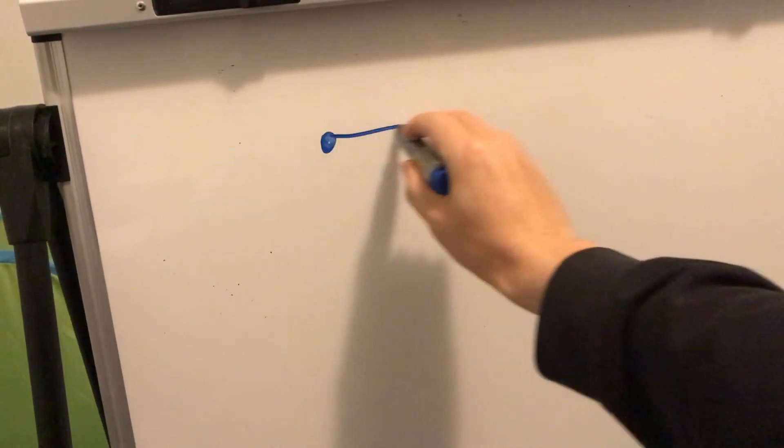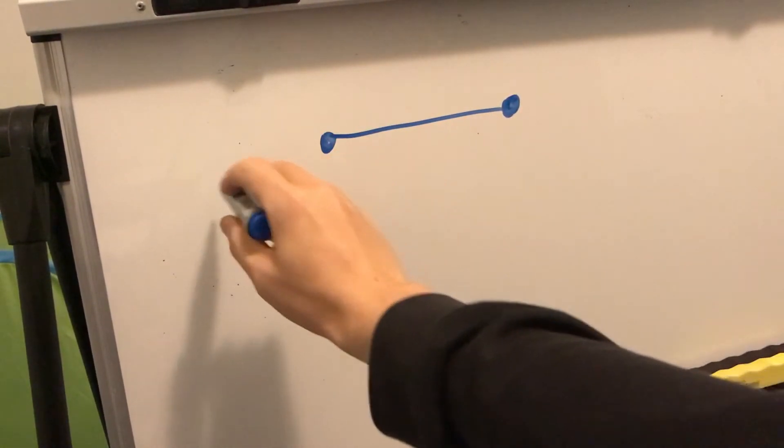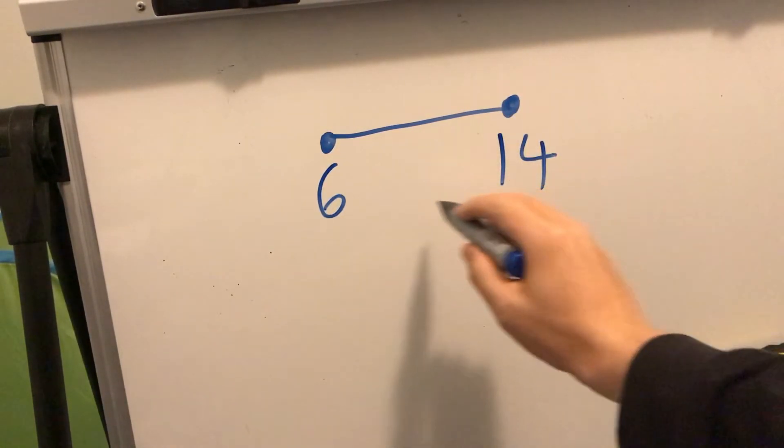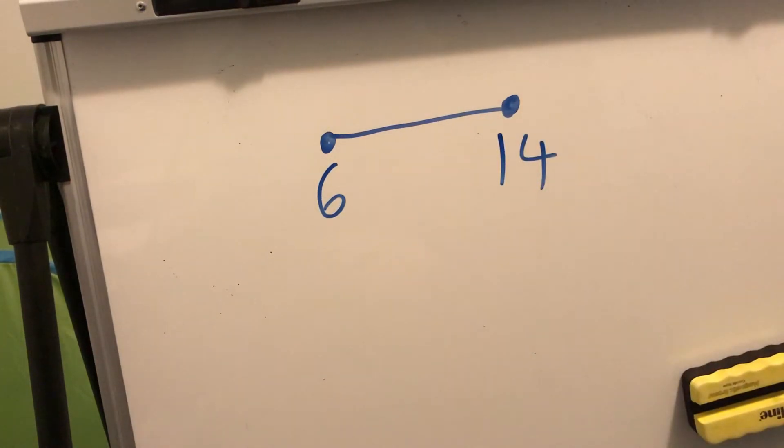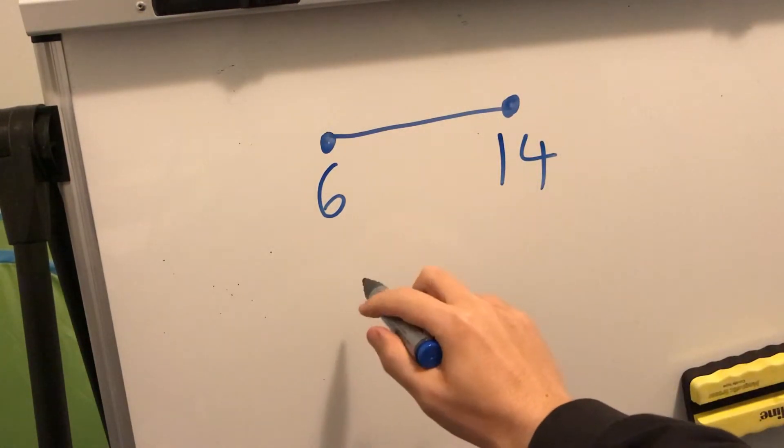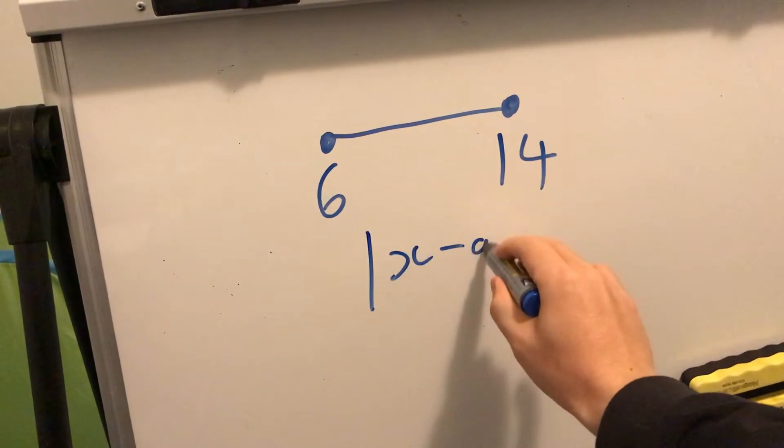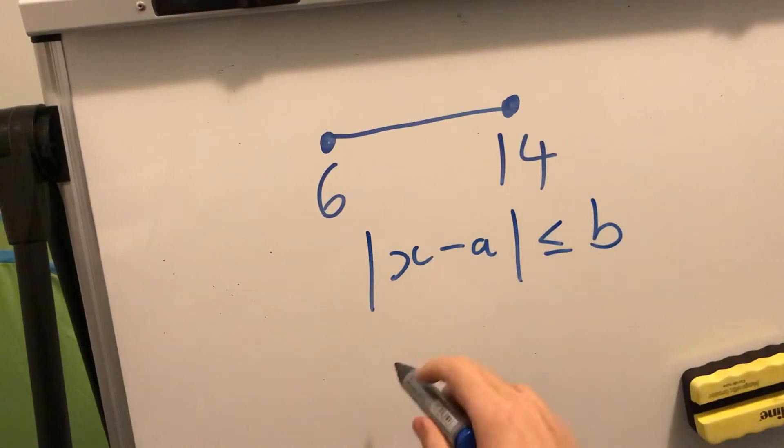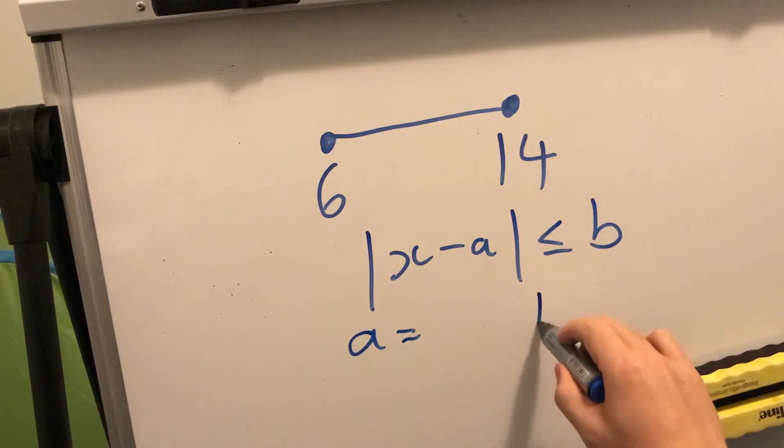So I want to talk about this question that appeared at the end of a half yearly year 11 test in extension 1. It had, on the number line, the points between 6 and 14 shaded in. And then it said these were the solutions of the following inequality |x-a| ≤ b. And then the question was to find A and then find B.